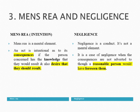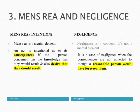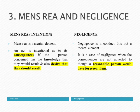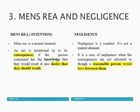Mens rea and Negligence. Liability may be based on mens rea, that is intention, or it may be based on negligence. Mens rea is a mental element, while negligence is a careless conduct — it is not a mental element. An act is intentional as to its consequences if the person concerned has the knowledge that they would result and also desires that they should result. It is a case of negligence when the consequences are not adverted to, though a reasonable person would have foreseen them.